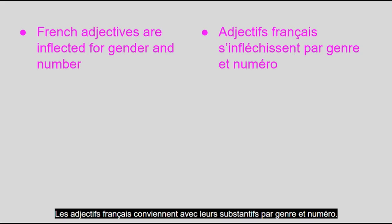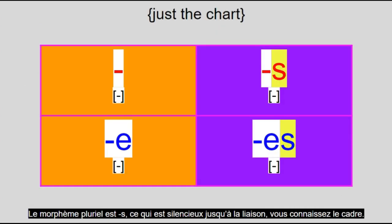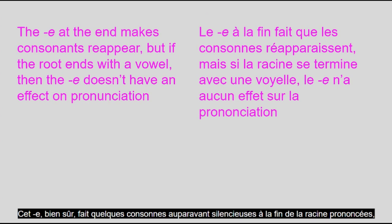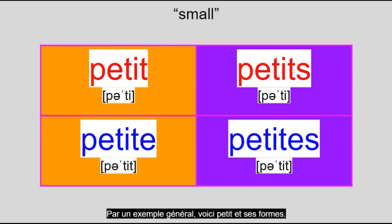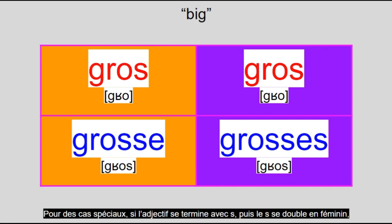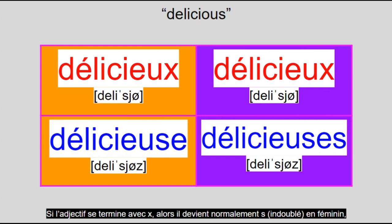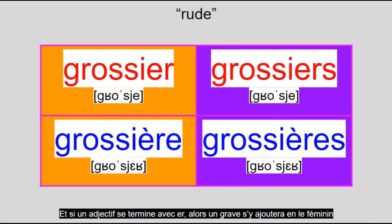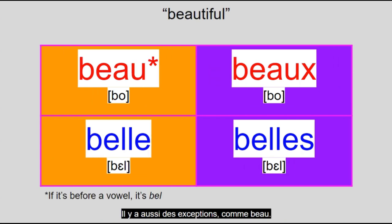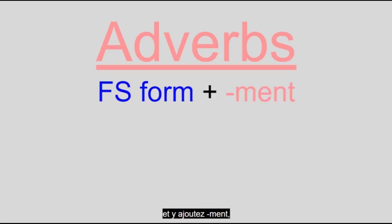Now it's time for the adjectives. French adjectives agree with their nouns in gender and number, identical to how they work with nouns. The plural morpheme is S, which is silent until liaison happens. Masculine adjectives in French don't have a special ending, and to make them feminine, you add E at the end. This E makes any previously silent consonants at the end of the root pronounced, although be aware that the root may not end in a consonant, like bleu or ivre, but the E still gets added. There are some adjectives like rapide whose masculine forms already end with E — they just stay like that in the feminine. For a general example, here's petit and its forms. Some special cases: if the adjective ends with S, then the S gets doubled in the feminine, though not in the plural. If the adjective ends with -eux, it normally becomes -euse in the feminine, and the masculine plural form is unchanged from the masculine singular, like délicieux. A unique example is doux, which becomes douce with a C in the feminine. If an adjective ends with -er, an accent grave will be added in the feminine to fit standard French writing conventions. To make an adverb, simply take the feminine singular form of the adjective and add -ment, with the exception of bien, which means 'well.'